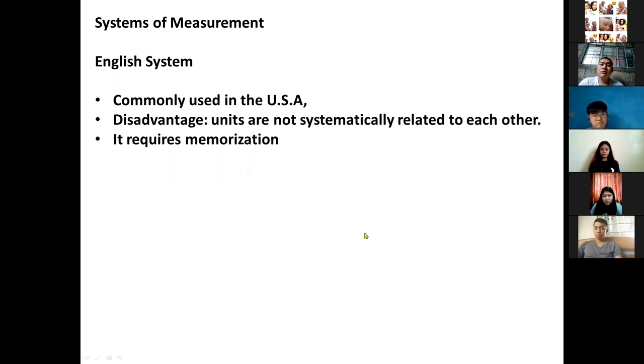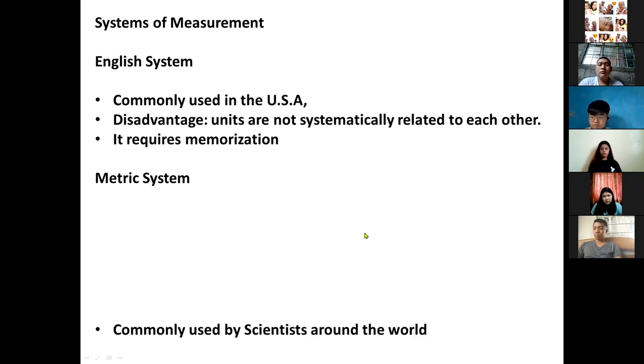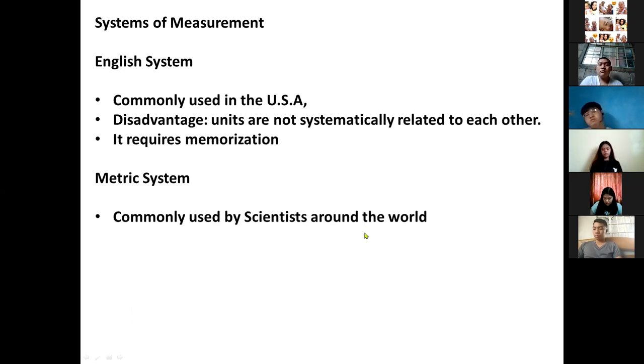That's what's being pointed out here as not systematically related. It's not direct. But if you audit it and look at the decimals, you'll see what should be done correctly. So it requires memorization because there are so many. Unlike the metric system, we use prefixes: kilo, deka, deci, centi. In English, you have to memorize many. But we can convert measurement from English to metric and vice versa. For example, feet and meter. Feet is under the English system, meter is under the metric system.